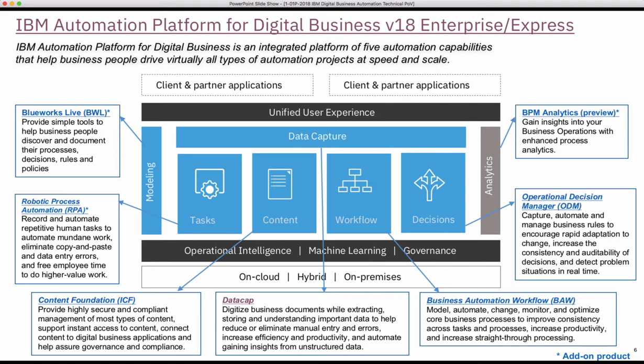As you recall from my pizza ordering process, I used IBM Business Process Manager — this is a workflow pattern to do the pizza ordering process. You also recall from my RPA video, Robotic Process Automation, where I took data out of a spreadsheet and filled in a web page. RPA is very good for that. I also showed you Operational Decision Manager for pricing the pizza and making those decisions and rules available to business users to manage the pizza prices.